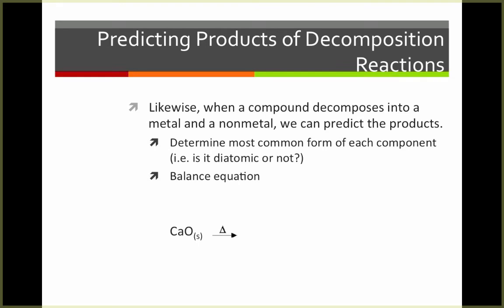For example, here calcium oxide is heated until it decomposes. This is going to give us calcium and oxygen. Calcium exists as a solid because it's a metal and it's not diatomic. Oxygen, as you know, is a homonuclear diatomic, so it's a diatomic gas, so we get O₂. So our products are solid calcium metal and oxygen gas.